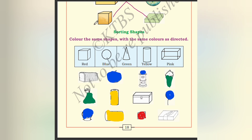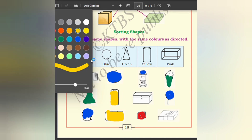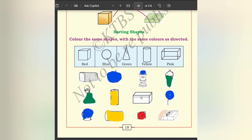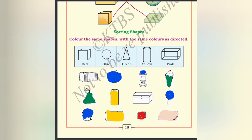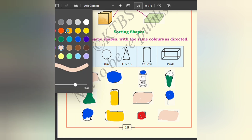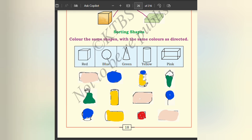Pink color is for the rectangular box. This rectangular box is colored pink. This is also a rectangular box — that is also colored pink. Then here is one cylinder left that is being colored yellow.